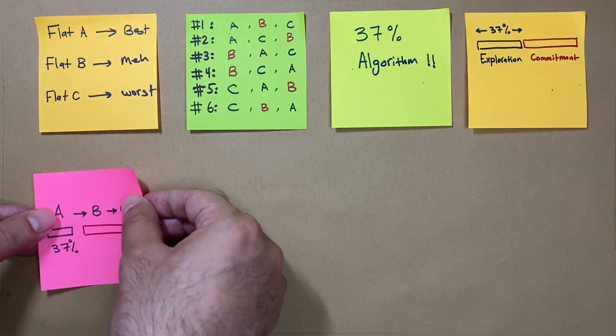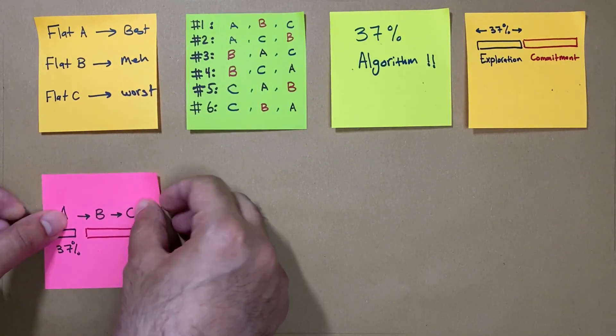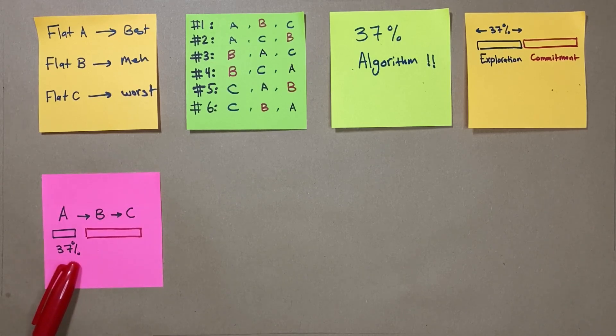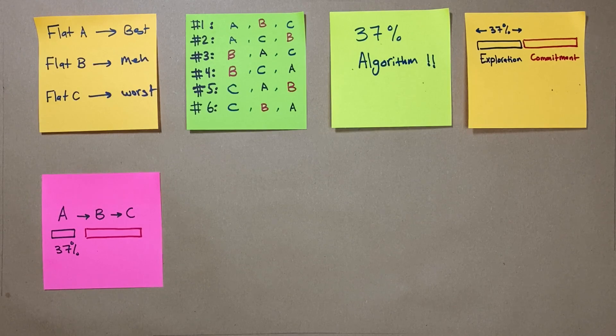For example, let's say that the flats will be presented to Ted in this order: A, then B, then C. Ted calculates 37% of the three options, which equals one option, and that will be his exploration phase.